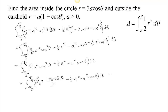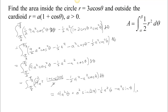Now we can write the antiderivatives. The antiderivative of 2a squared is 2a squared theta. For 2a squared cosine 2theta, the antiderivative is a squared sine 2theta (since differentiating gives 2a squared cosine 2theta via the chain rule). The antiderivative of minus one half a squared is minus one half a squared theta, and the antiderivative of minus a squared cosine theta is minus a squared sine theta. We evaluate all of this between the limits pi thirds and minus pi thirds.